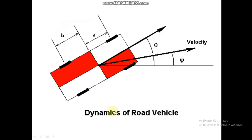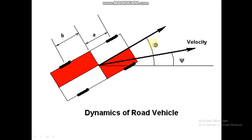Now we will analyze the dynamics of a road vehicle. If you have a four-wheeler on a horizontal plane, it has a center of gravity, and the front axle is at a distance 'a' from the center of gravity while the rear axle is at a distance 'b' from the center of gravity. The vehicle is heading in a direction at angle theta from the horizontal, but it is actually moving at an angle psi.